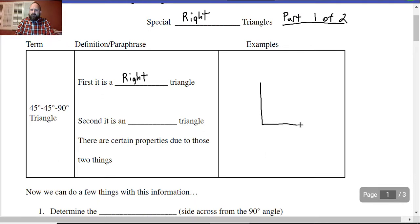So it's a right triangle. What else do we also know? That it's an isosceles triangle. That means that the legs are congruent.